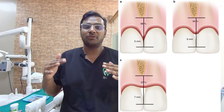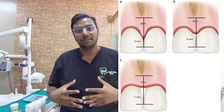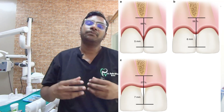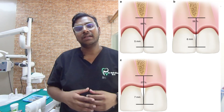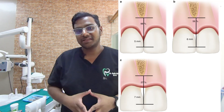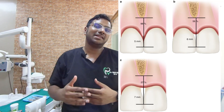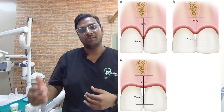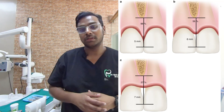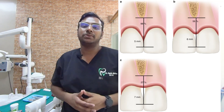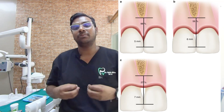If the distance between the contact point and the alveolar bone crest is about 5mm, you can still achieve success in bringing the teeth back together. If the distance is about 6mm, the odds become less. If it's more than 6 or 7mm, it becomes even more difficult to achieve closure.